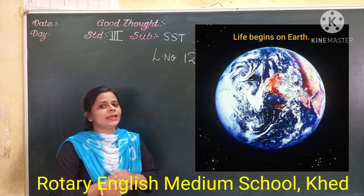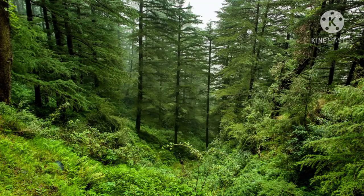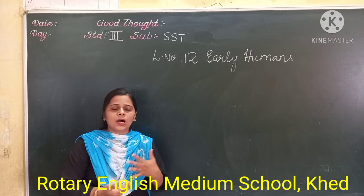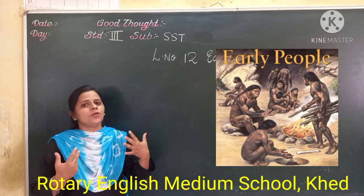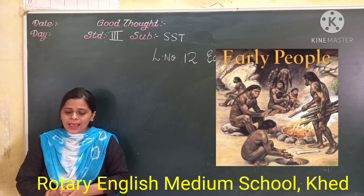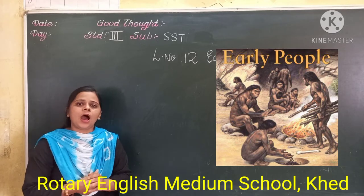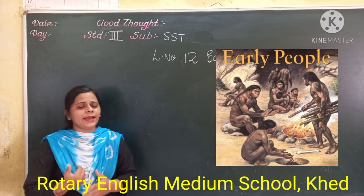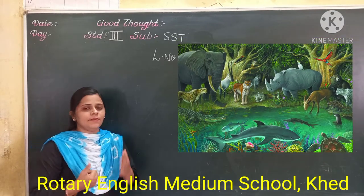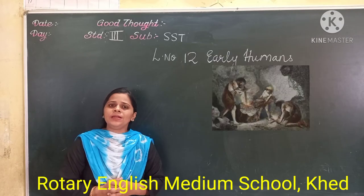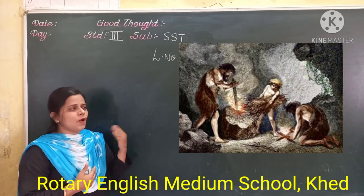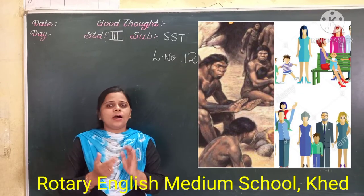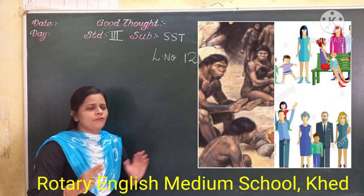When life began on the earth, it was full of forest and wildlife. These early humans used to live in the forest. You know that human beings are the most powerful beings on the earth - they can think and act. But animals cannot. Humans can make things and they can pass their knowledge from one person to another. These early humans were very different from modern humans.